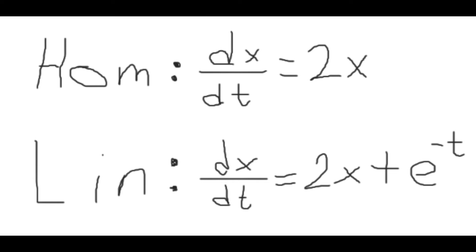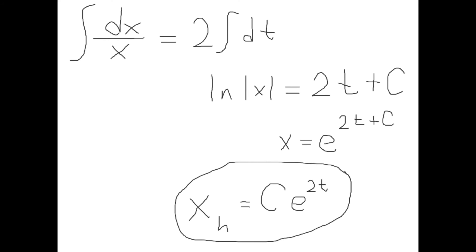For this, I used the lucky guess method, or basically the linear method. What I found was that the homogeneous and linear equations only had a difference of e to the power of negative t, so I used the homogeneous equation to start. I just had to use separation of variables to find the homogeneous part of the solution, and I got that x_h for a general solution is ce to the power of 2t.